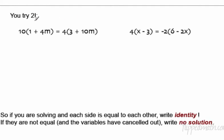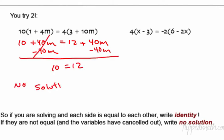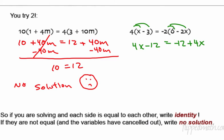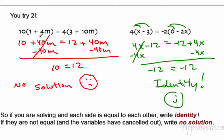Now it's your turn to try the last two — pause the video and go. Welcome back. The first one: use the distributive property to get 10 plus 40M equals 12 plus 40M. Get rid of 40M from both sides — they cancel — and you get 10 equals 12. That's no solution. The second one: distribute both sides to get 4x minus 12 equals negative 12 plus 4x. Subtract 4x from each side — negative 12 equals negative 12. That's an identity.